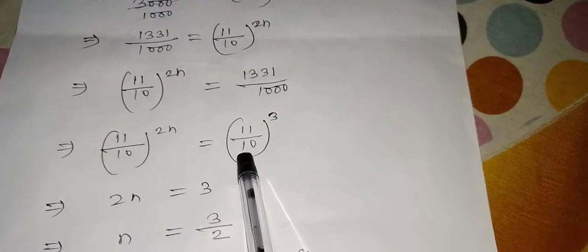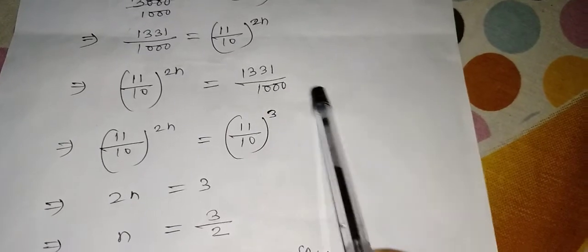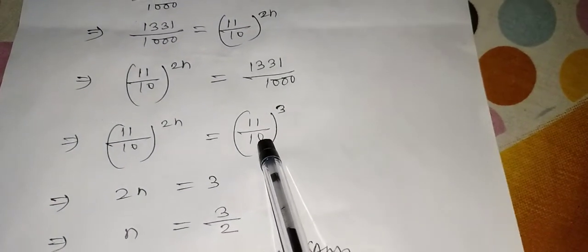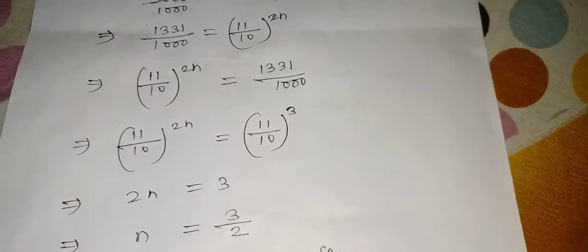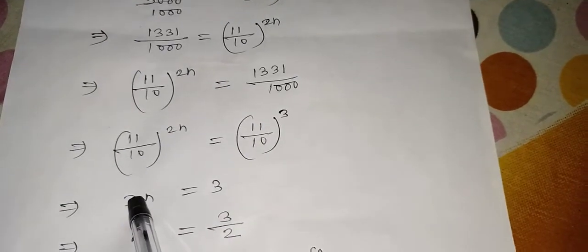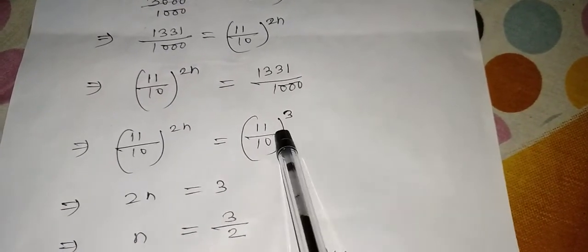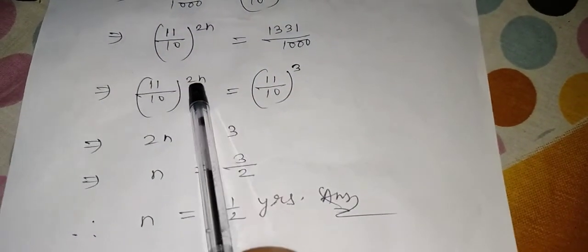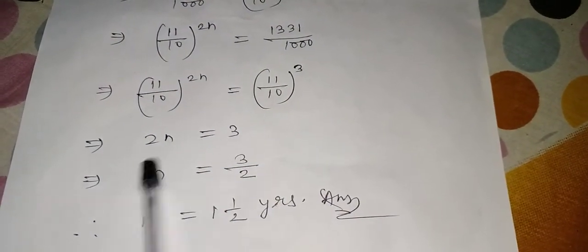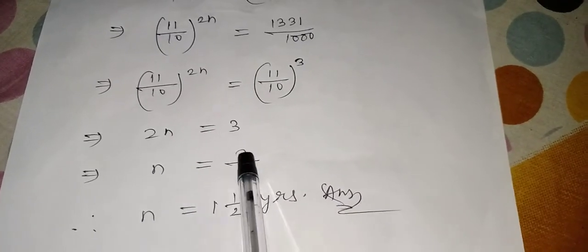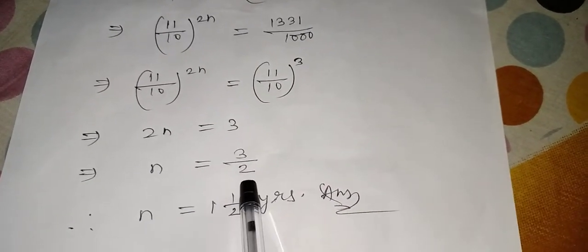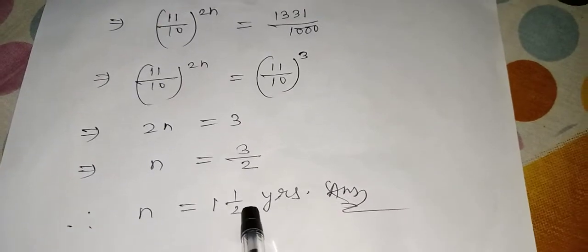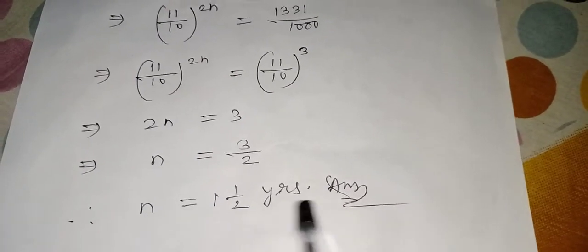So same thing I wrote here but in the form of cube. Now same thing I wrote here again. When base is same, the base gets cancelled, power becomes equal. So I can say 2n = 3. 2n = 3 means n = 3/2. 3/2 when you divide by 2, it is one and half years. So n value is one and half years.